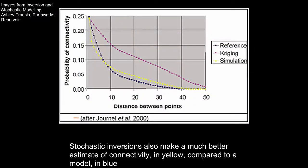Stochastic inversions also make a much better estimate of connectivity, in yellow, compared to a model, in blue.